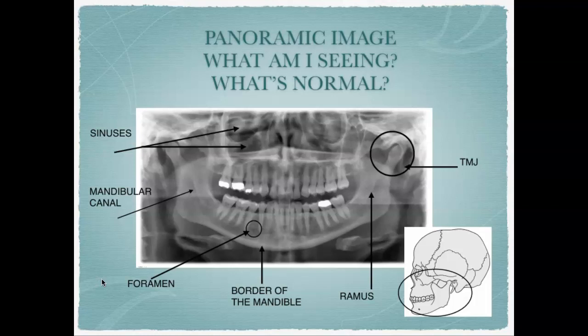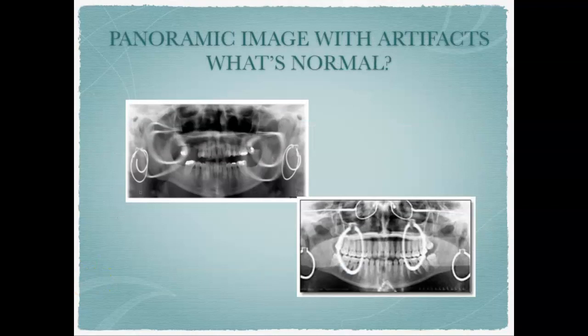It's important for us to recognize what is normal so we can be confident that we have a diagnostic quality image. If we have a panoramic image that looks distorted, something happened — for example, the patient was not asked to remove their earrings or glasses. We want to make sure we're starting out with good technique in order to get a quality image.